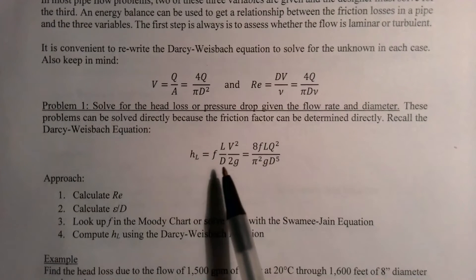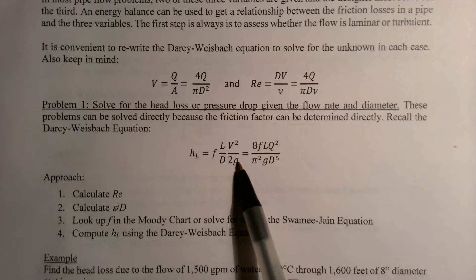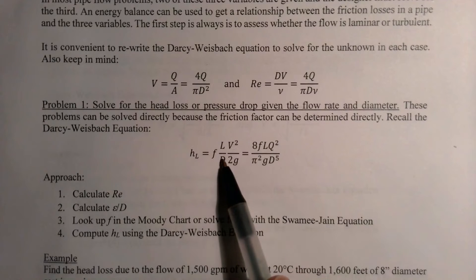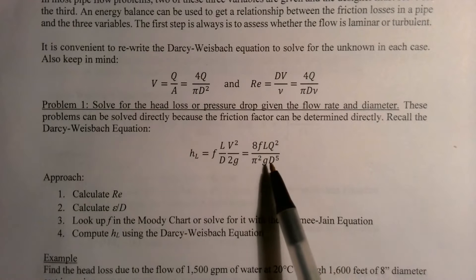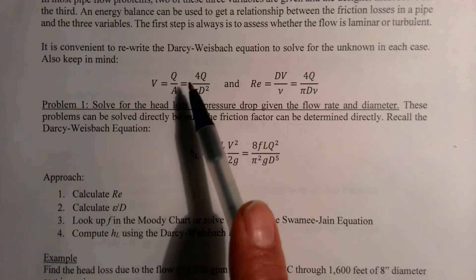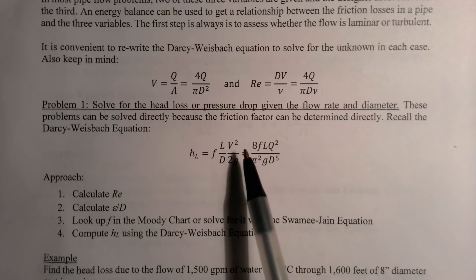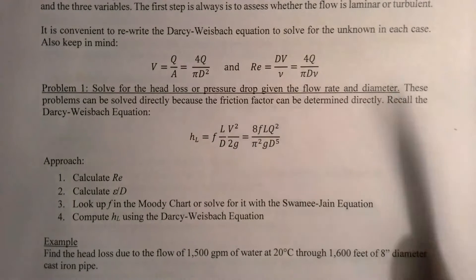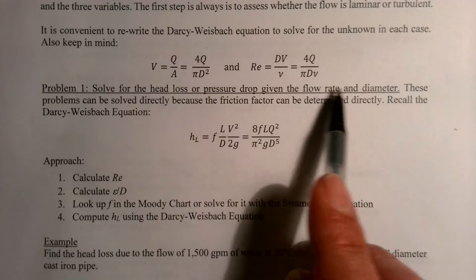We'll always need the Darcy-Weisbach equation to compute head loss given the friction factor. It's typically written as h_L = f·(L/D)·(V²/2g). As the pipe gets longer or velocity gets bigger, head loss increases; as diameter gets bigger, head loss decreases. We can rewrite this in terms of flow rate instead of velocity — these two forms are the same equation. This is the first kind of problem: solving for head loss or pressure drop when we know flow rate, diameter, and fluid properties.